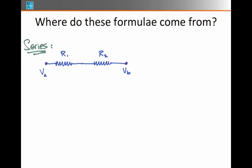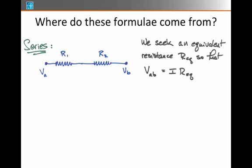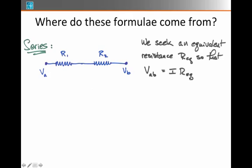Where do these formulae come from? Well, the formula for the resistors in series comes from the fact that we're trying to seek an equivalent resistance so that the voltage drop from point A to point B is equal to the current flow through these resistors times some equivalent resistor R sub EQ. The key point here is that the same current flows through both R1 and R2. No charge is lost in a circuit.